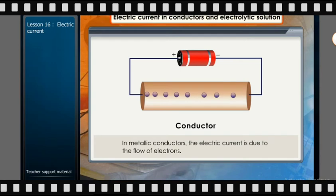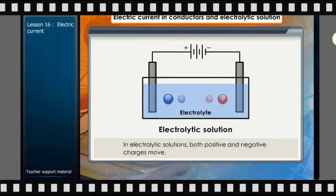In metallic conductors, the electric current is due to the flow of electrons. In electrolytic solutions, both positive and negative charges move.